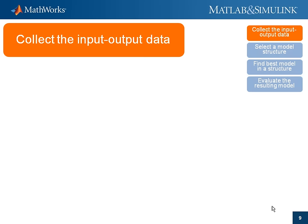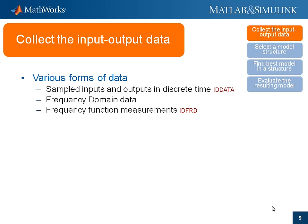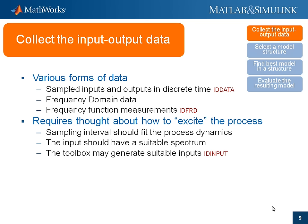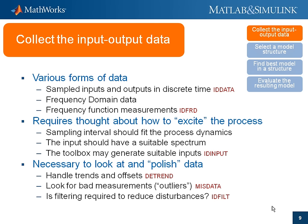The input-output data we collect may be sampled time domain signals, measurements of their Fourier transforms as frequency domain data, or measurements of the frequency functions obtained by a frequency analyzer. Designing experiments that produce measurements carrying suitable information about the system requires thought — it involves questions like what sampling rates to use and what frequency content is suitable for the input. When data has been collected, it must be critically examined and possibly polished: removing offsets and trends, looking for missing data and outliers, and pre-filtering to remove bad disturbances.